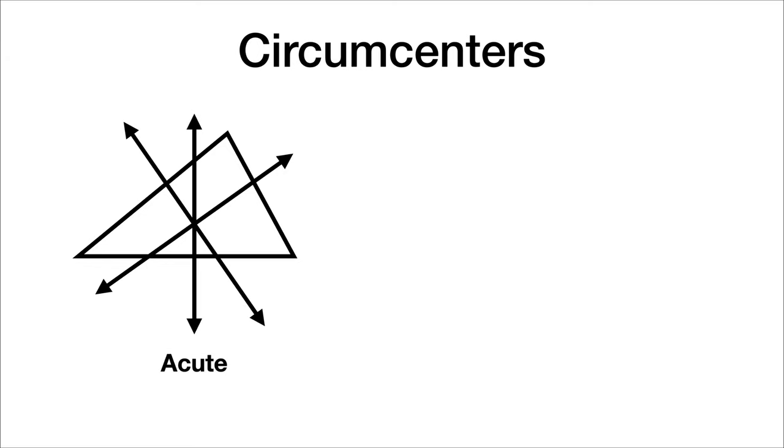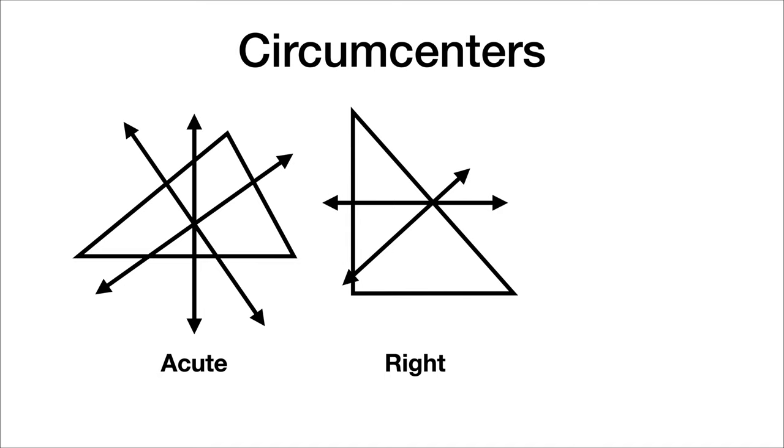But now let's talk about what happens if we have a circumcenter elsewhere. For instance, on a right triangle. With a right triangle, the circumcenter will end up being at the midpoint of the hypotenuse.